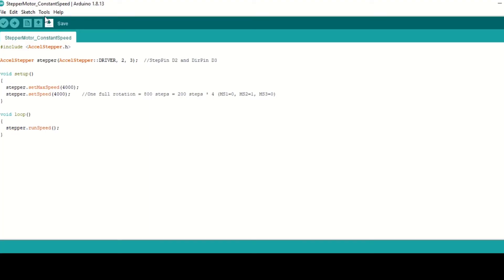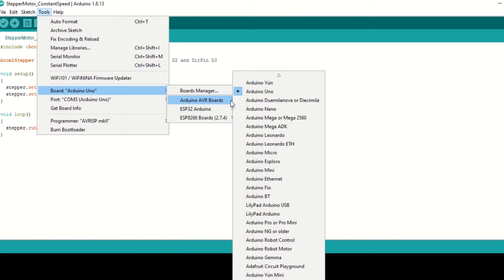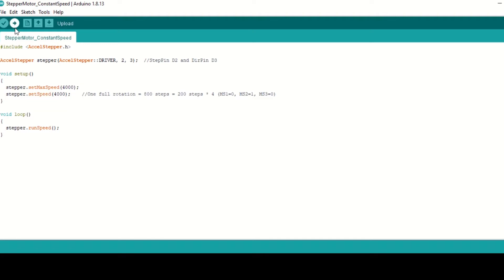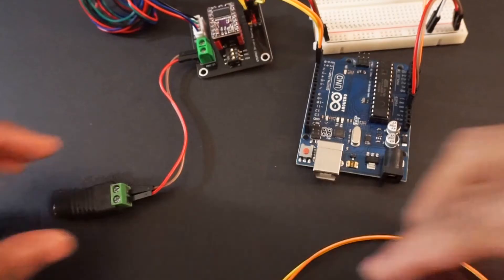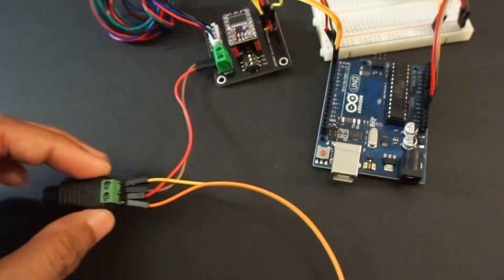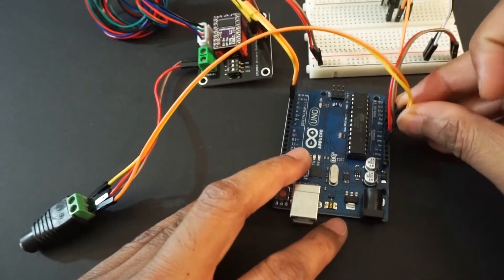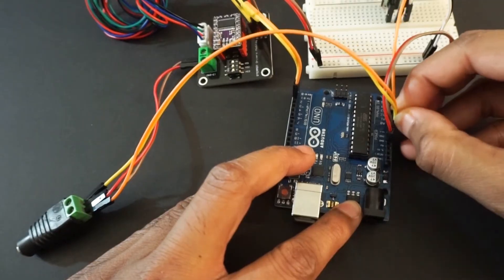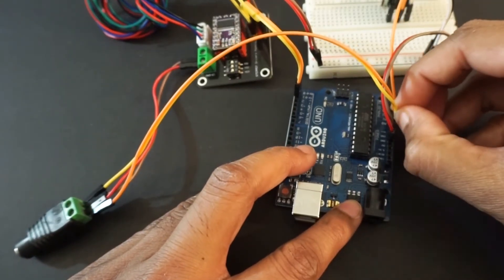Upload this code into Arduino Uno. Now select Arduino Uno board and port, hit upload. Now remove Arduino from laptop and provide 12 volt to Arduino through Vin and ground pin from DC supply. Plug in adapter.